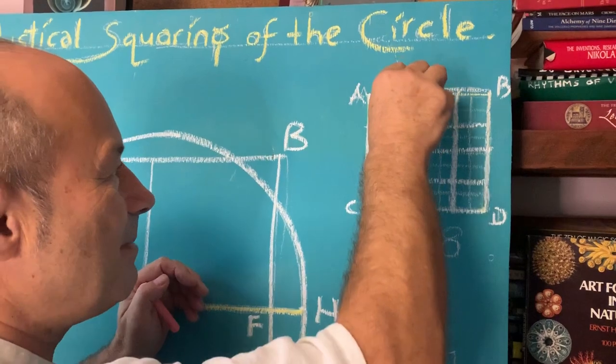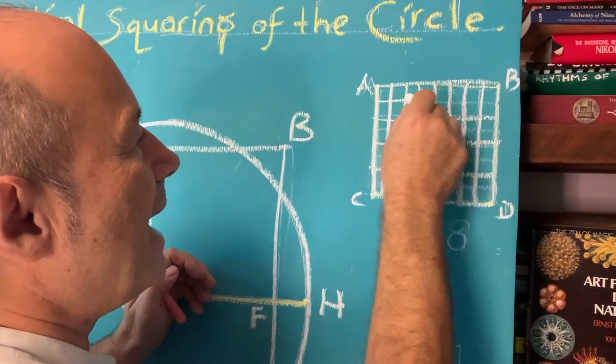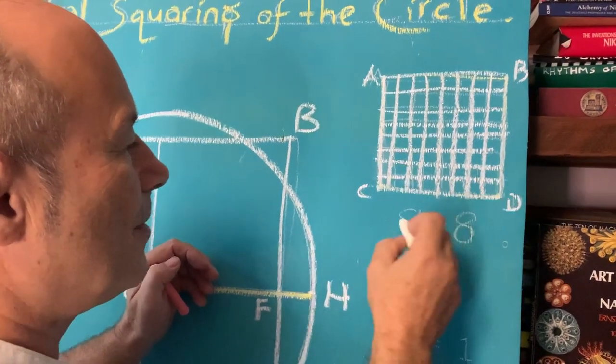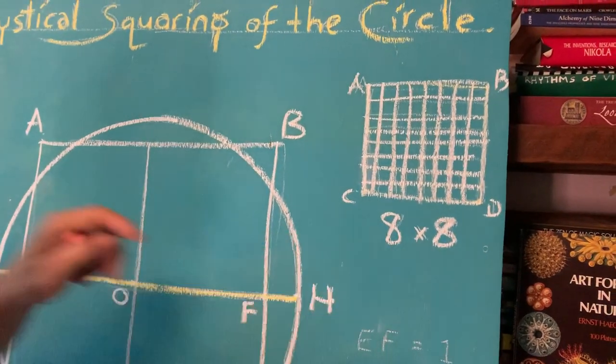So by just taking all these midpoints like that, we've created a grid, an 8 by 8 grid, that has 64 mini squares, or little cells. So that's an 8 by 8 grid.